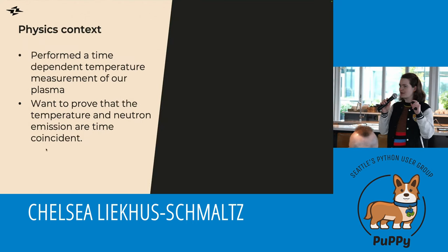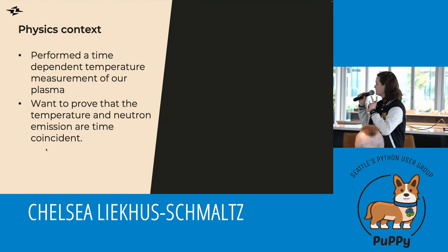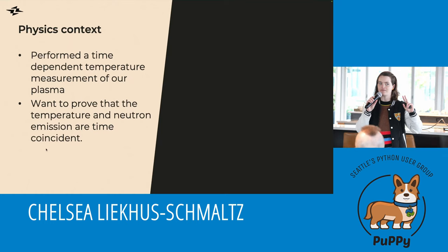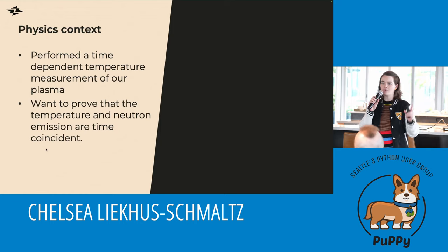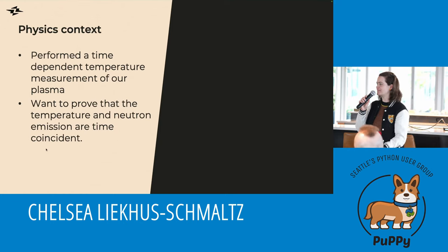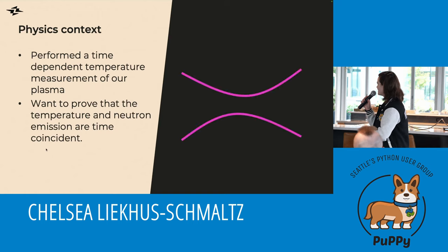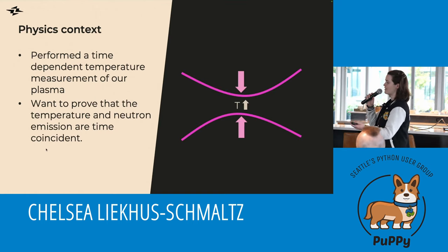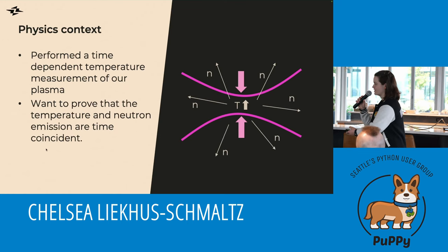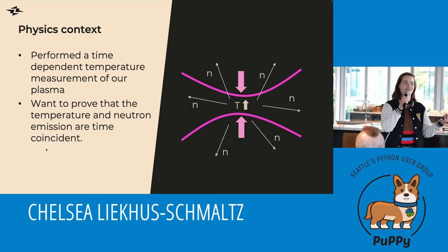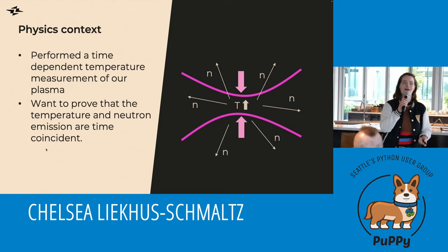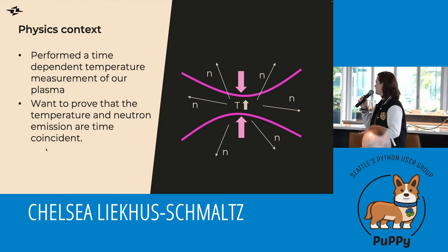A tiny amount of physics context: this paper is based off of a time-dependent temperature measurement we made of our plasma. The goal is basically to show that neutrons come out when the temperature goes up. We have our plasma, we pinch it down, the temperature should go up, and then more neutrons should come out. That kind of validates that we're doing something correct and worth continuing in our investigation.